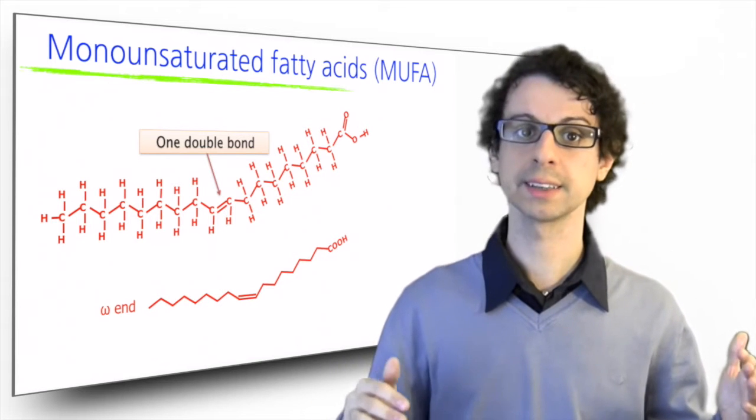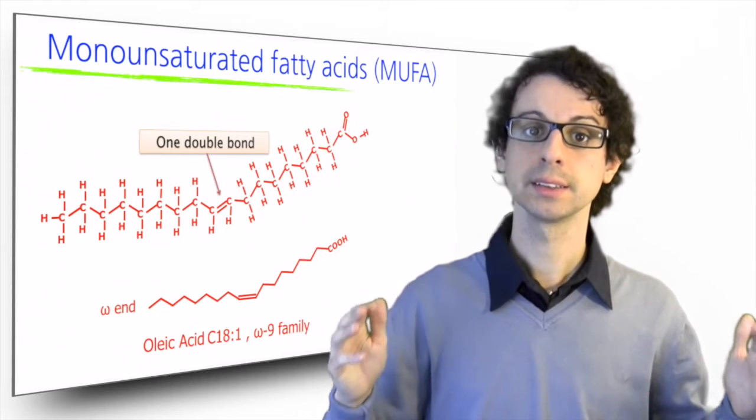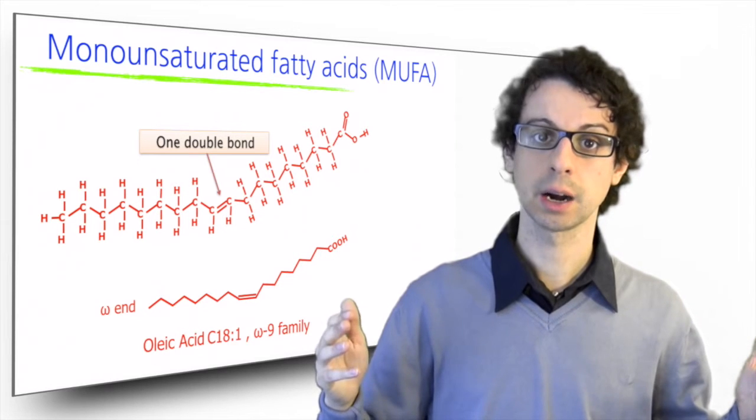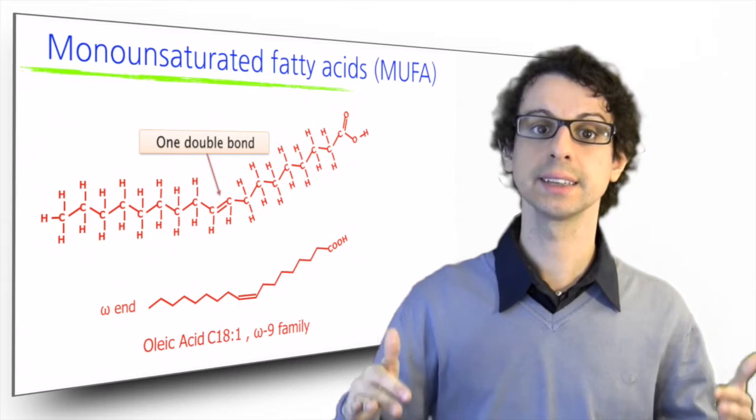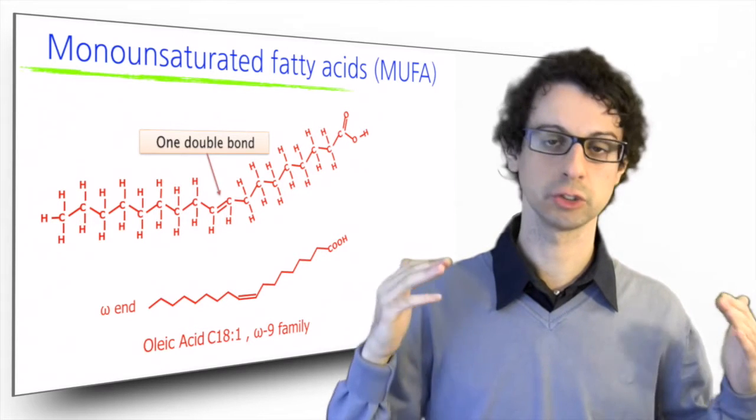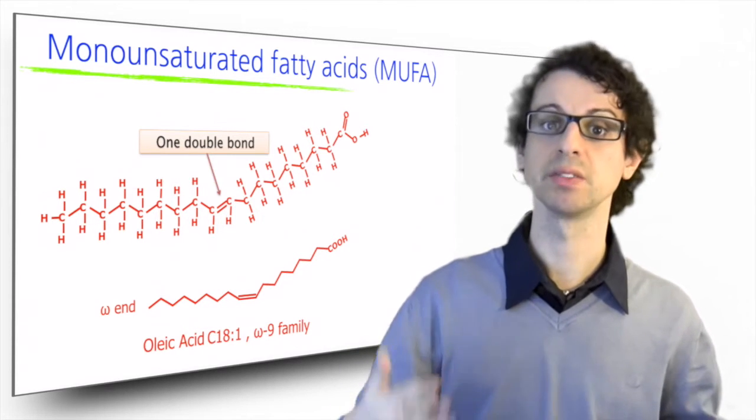We can also represent it like that. Or we can write C18 for 18 carbons in the chain, 1 for 1 unsaturation, and omega-9 to indicate that this double bond occurs in position 9 from the omega end of the fatty acid.